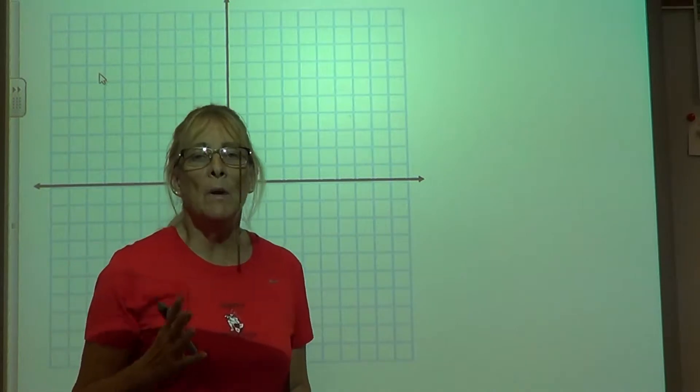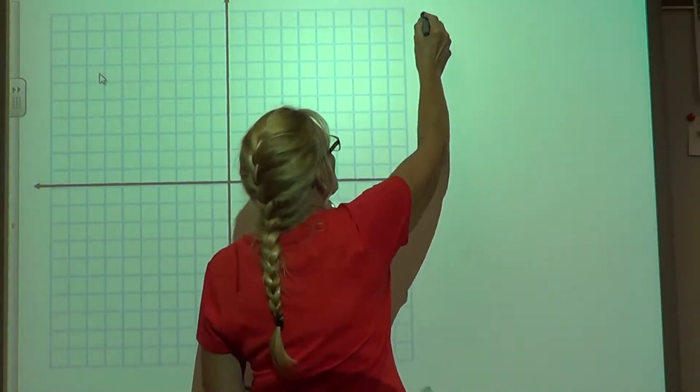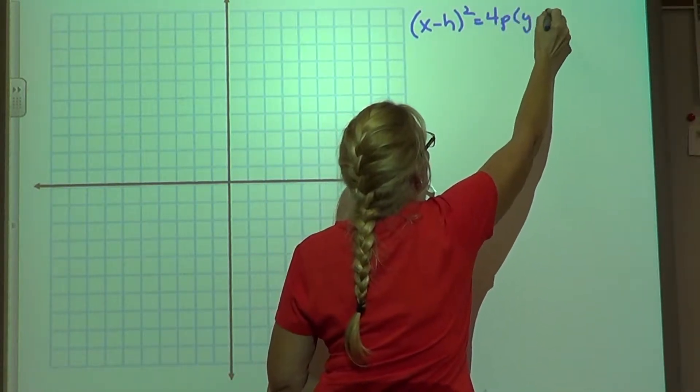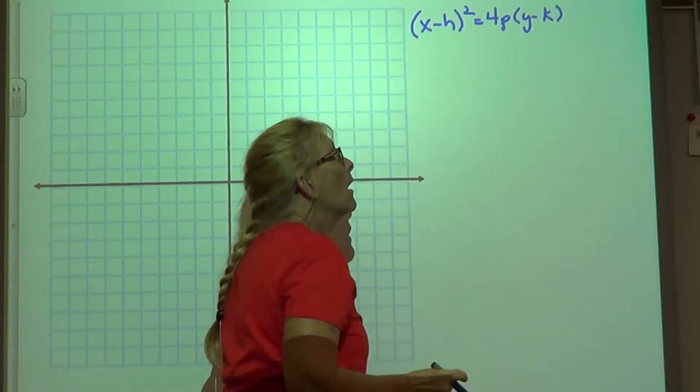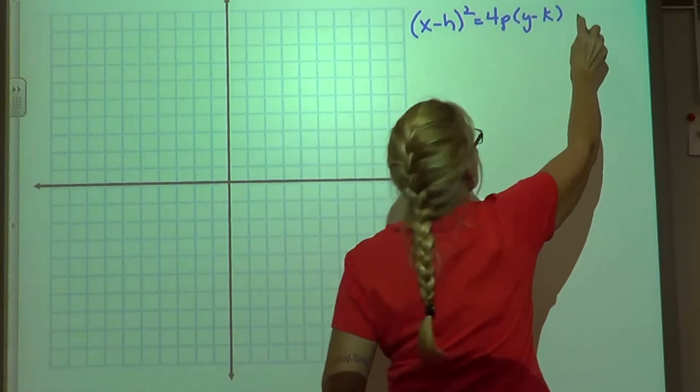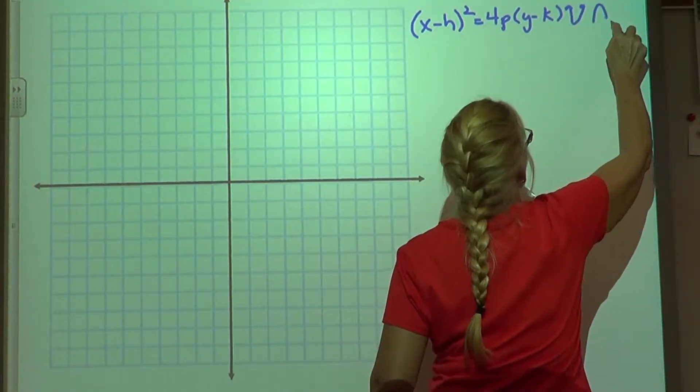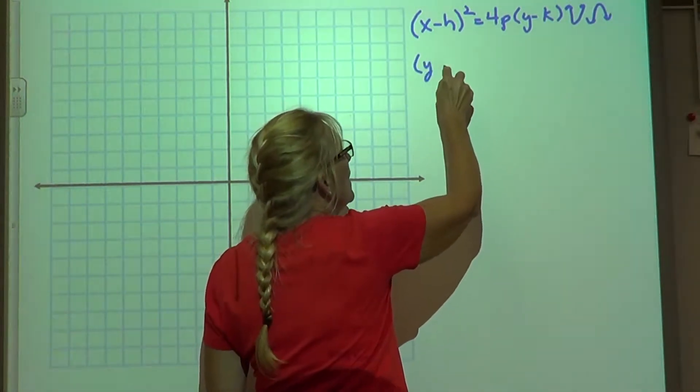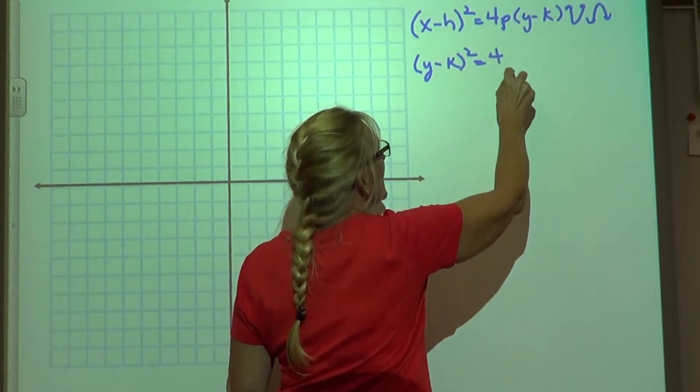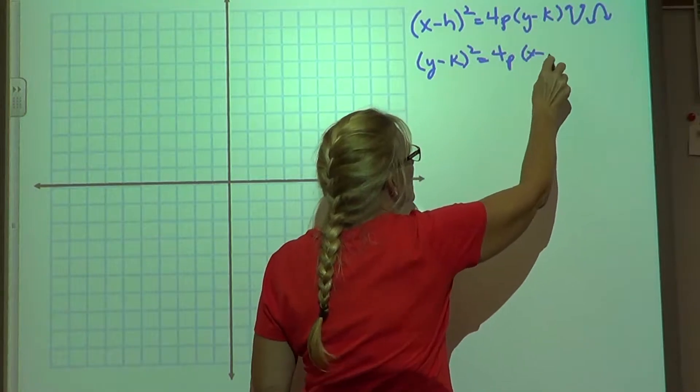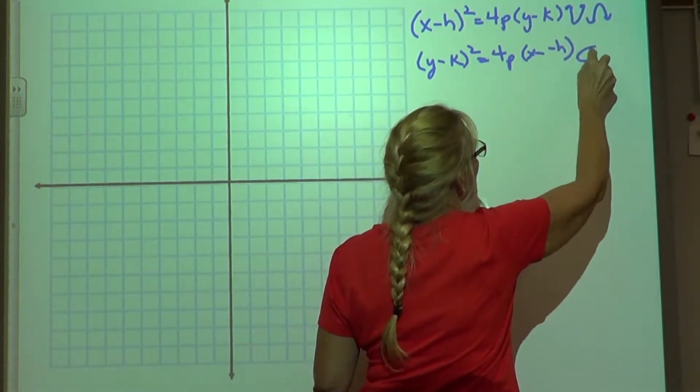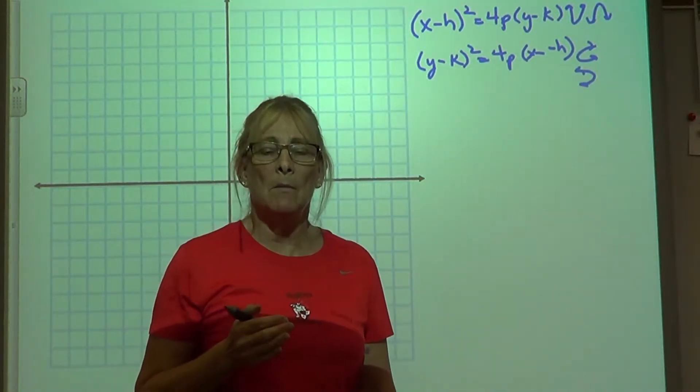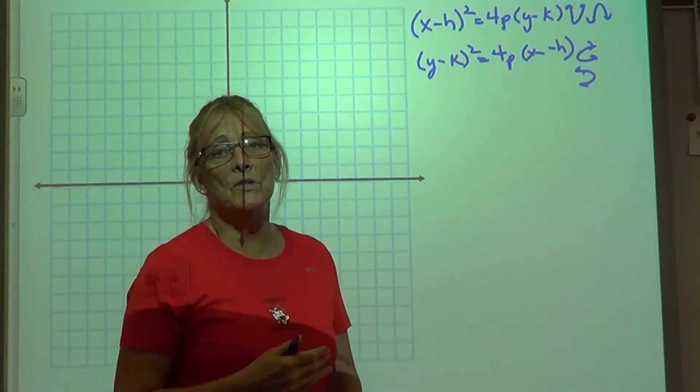Remember the two equations that we need to keep most important, and that is x minus h squared equals 4p times y minus k. That is one that opens up or down. And the other equation is where y is squared, so it's y minus k squared equals 4p times x minus h, which opens right or left. Those are the most important equations to keep in mind. So we're going to work with those today on the half-sheet.